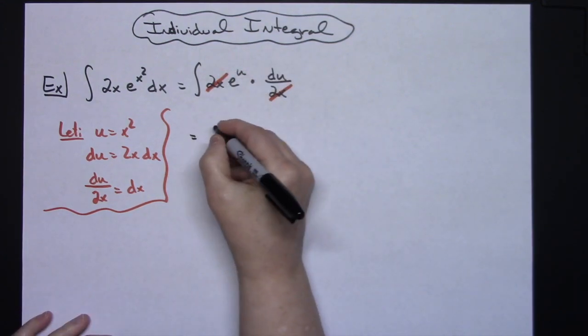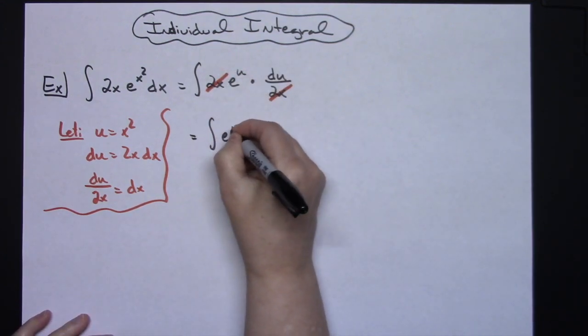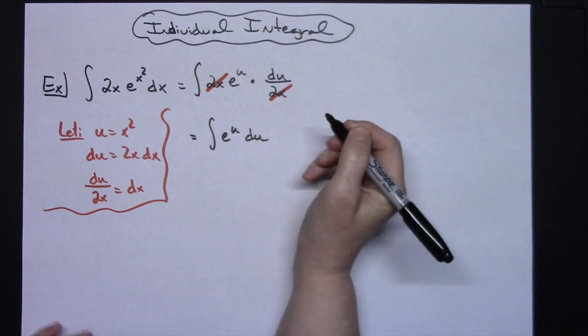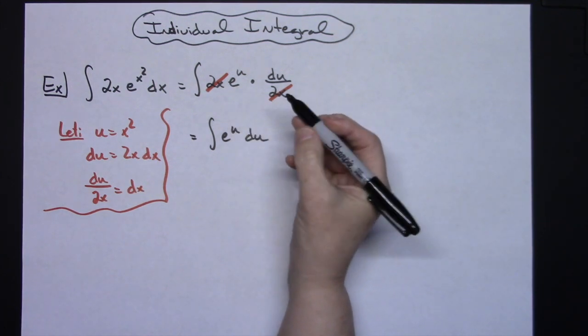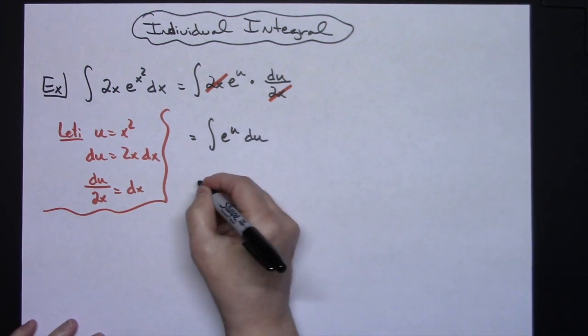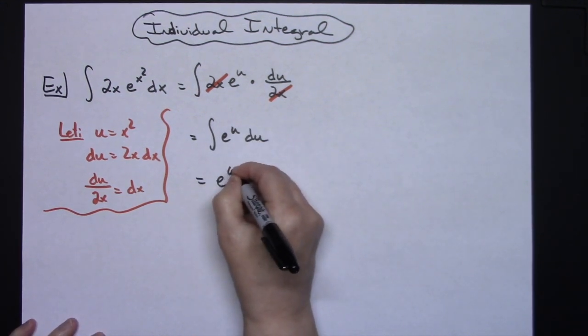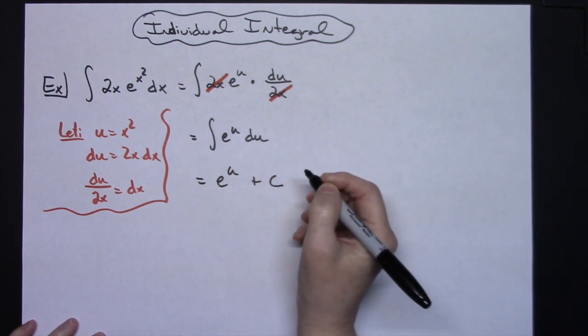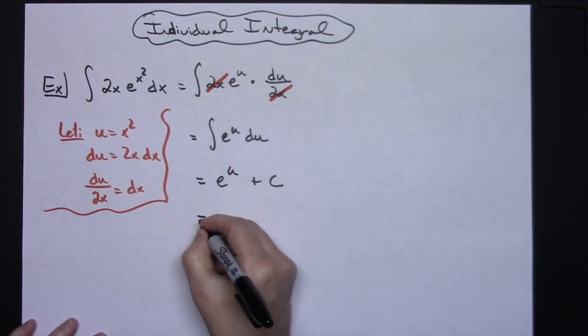Hopefully if you are at the place to where you are doing these u-substitutions, you have the integral of e to the u memorized as e to the u. So we'll have e to the u plus c. Your last step then would be to replace that u with what we said it was going to be, so e raised to the x squared plus c.